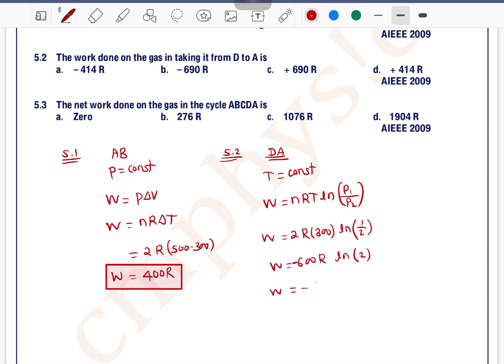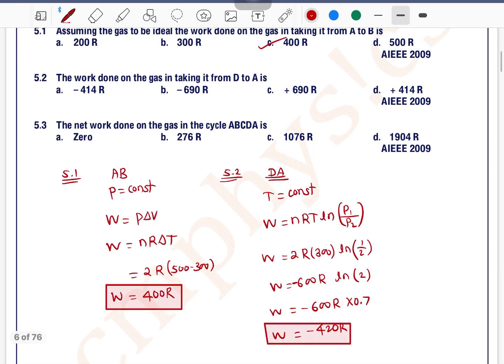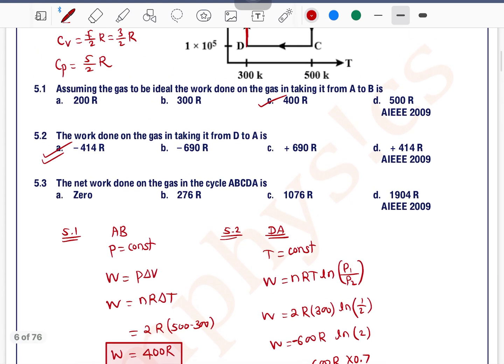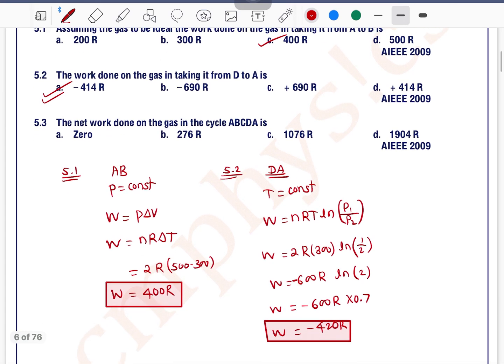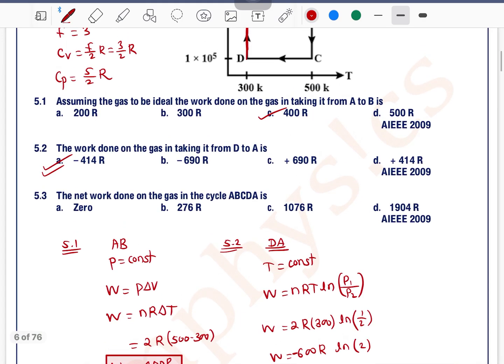to the power minus 1. So this can be written as -600R·ln(2). -600R times... ln(2) is 0.693, approximately 0.7. So this can be written as approximately -420R. This is not exact, but approximately -420R. So option A is correct.